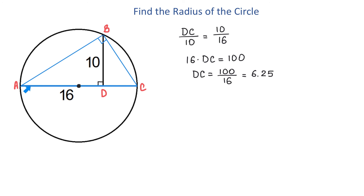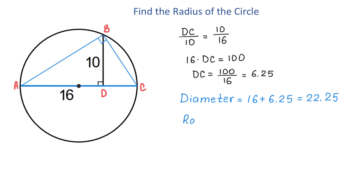If we take 16 and add 6.25, we will find the diameter. So the diameter is 16 plus 6.25, which equals 22.25. Then the radius will be half of the diameter: 22.25 divided by 2, giving a radius of 11.125 units.